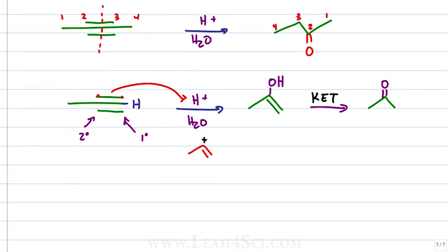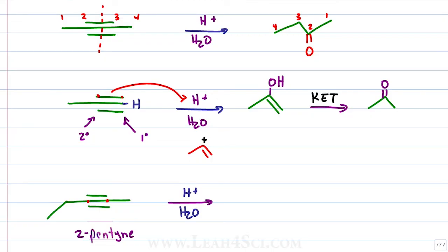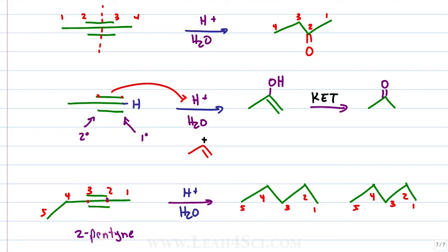But first, one more thing about this reaction: if we're starting with an asymmetrical internal alkyne — for example 2-pentyne — each of the carbons holding the triple bond is secondary. In this case, the reaction is not going to be regioselective, meaning we're not going to favor one carbon over the other because they're both secondary. If we react this with an acid catalyst in H2O, we're going to get two different ketones. Since the alkyne sits between carbons 2 and 3 and both are secondary, the products can have a ketone on carbon 2 or carbon 3 for a mixed result.